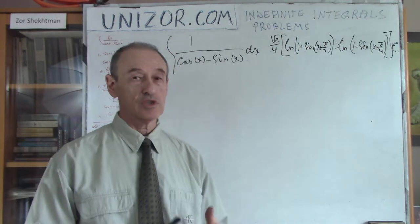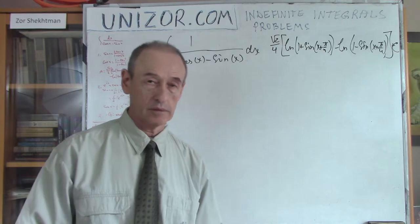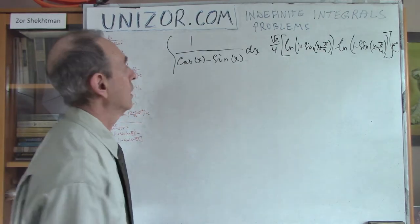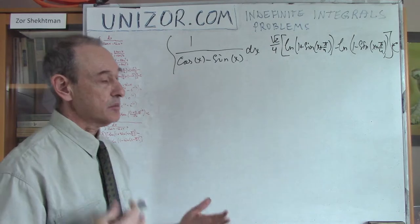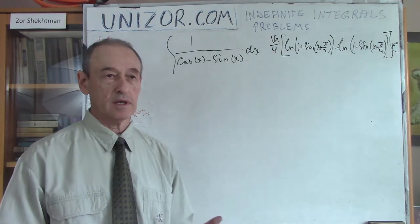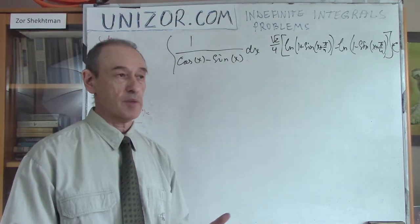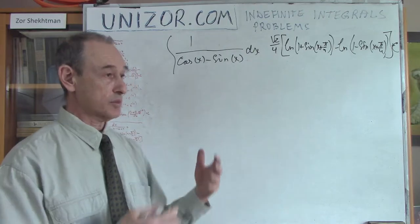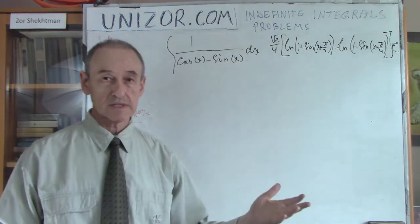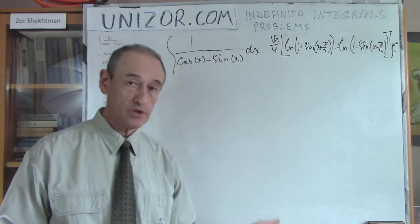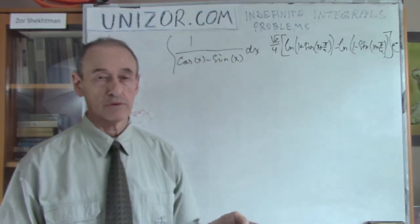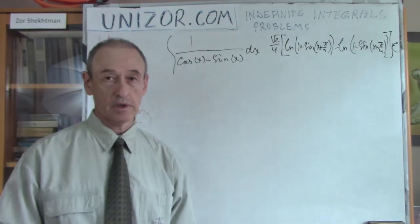Now I would like to suggest another approach. My purpose is to integrate this expression, and my first step is to simplify it somehow. In the previous lecture I simplified by multiplying by √2/2 and converting into cosine of (x + π/4). Now I will do it differently. I will recall that every trigonometric function can be rationalized through the tangent of the half angle.